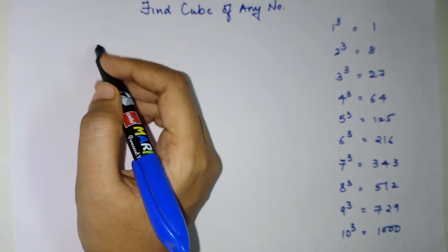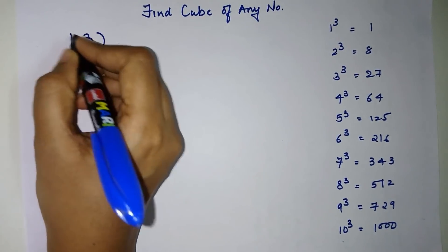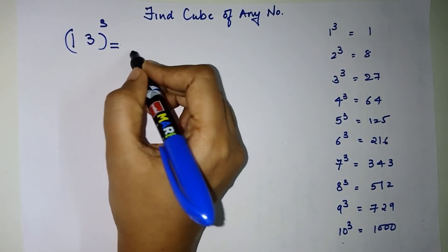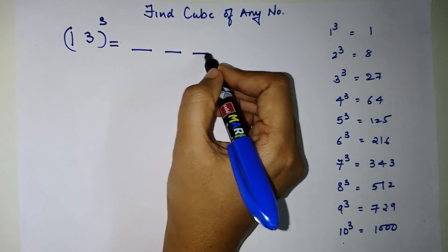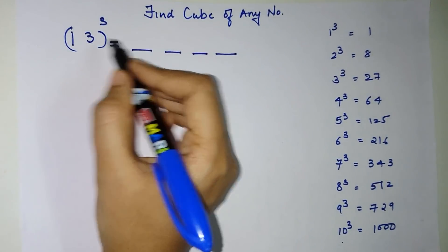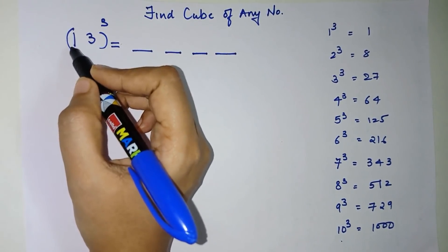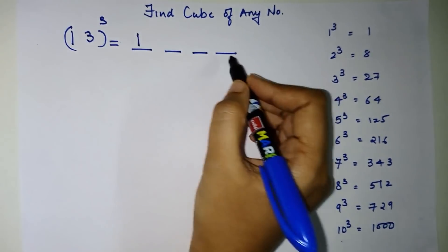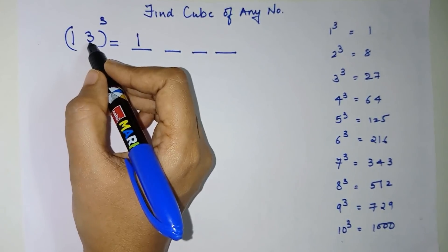Let us first try to find the cube of 13. In order to find the cube of 13, your answer gets divided into four parts. The first part will be the cube of the first digit — cube of 1 is 1 — and the last part will be the cube of the last digit.